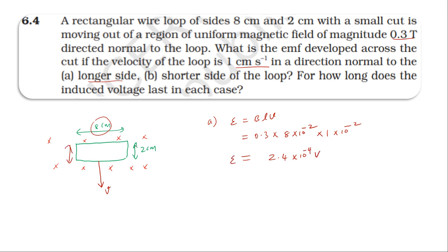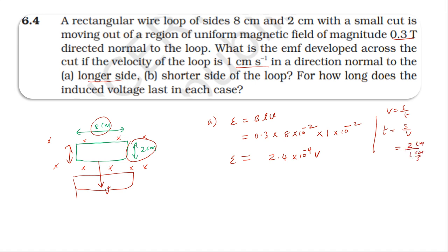Now for the time duration in Case 1: using velocity equals distance by time, time equals distance divided by velocity. The distance to cross is 2 centimeter, velocity is 1 centimeter per second, so time equals 2 seconds. The induced EMF lasts for 2 seconds in Case 1.